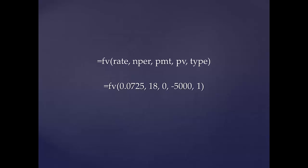Rate is the nominal interest rate per compounding period written in decimal form, previously identified as I equals 7.25%. N per is the number of compound periods, previously identified as N times M equals 18.